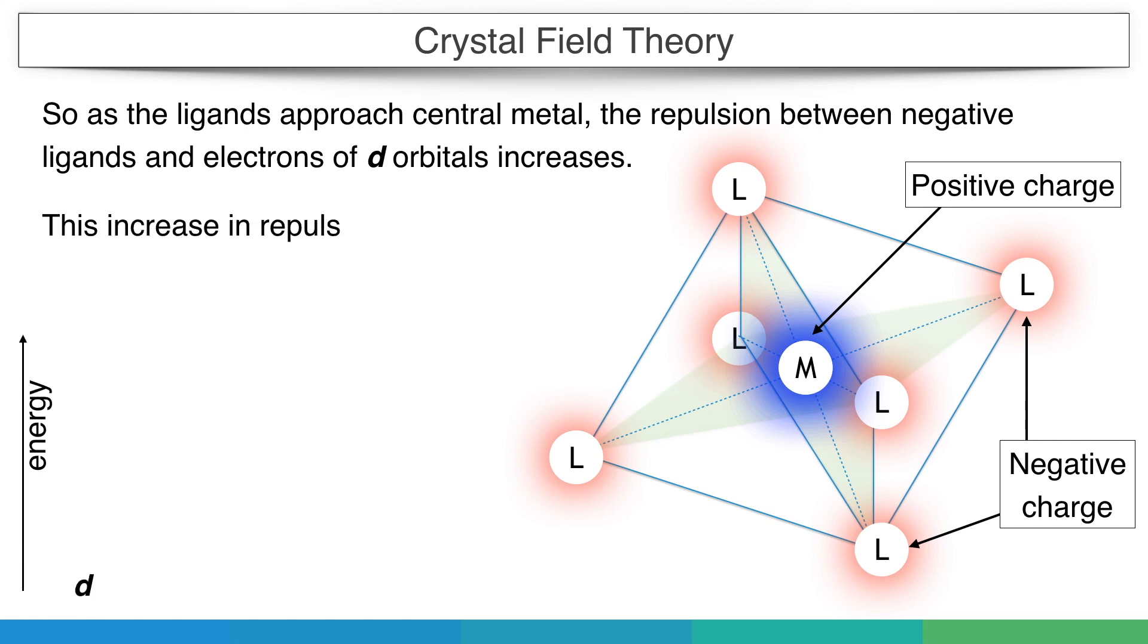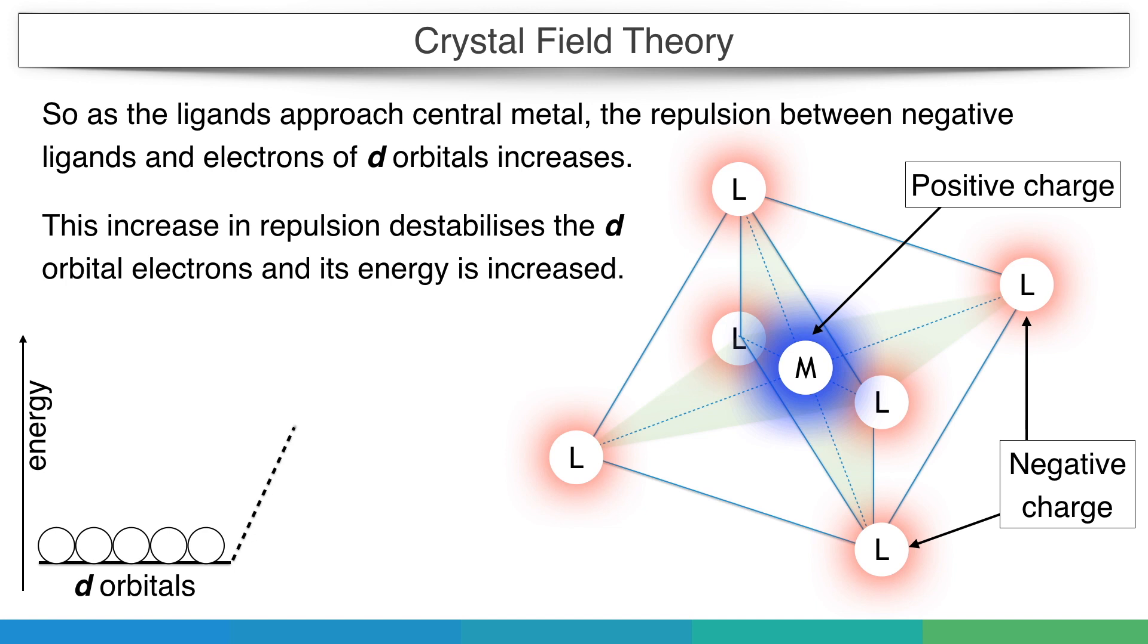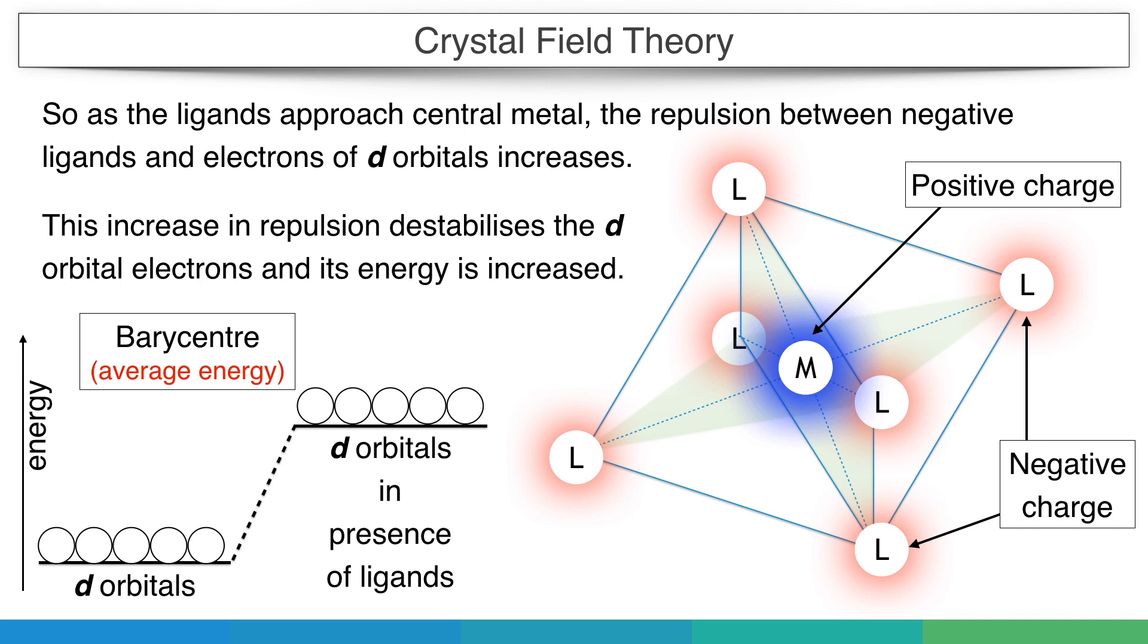This increase in repulsion destabilizes the d orbital electrons and increases their energy. This increased energy level due to the negative field of ligands is called the barycenter. This is the average energy of all five d orbitals.